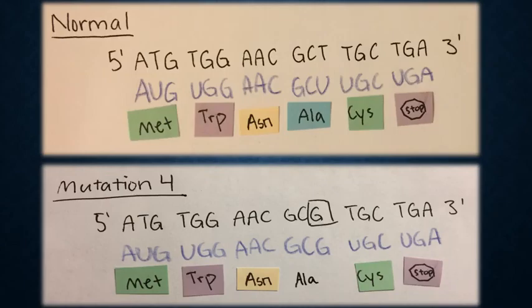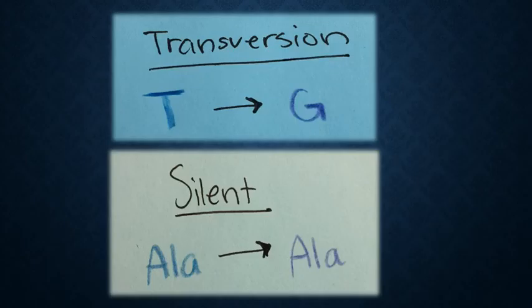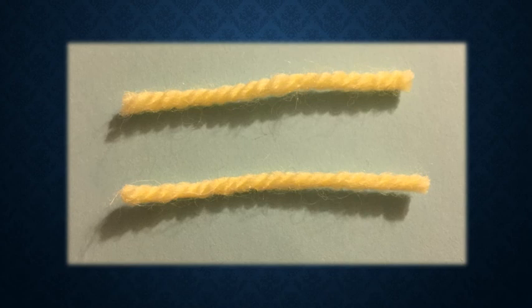For our final mutation, we can see that thymine is mutated to guanine. We can also see that the codon GCT in the normal strand, which transcribes to GCU, translates to the amino acid alanine, which is the same as the codon GCT in the mutant strand, which also translates to the amino acid alanine. This is a transversion mutation because a pyrimidine is changed to a purine. This is a silent point mutation because the codon that codes for alanine mutated to a codon that also codes for alanine.